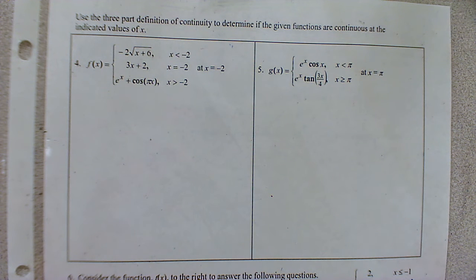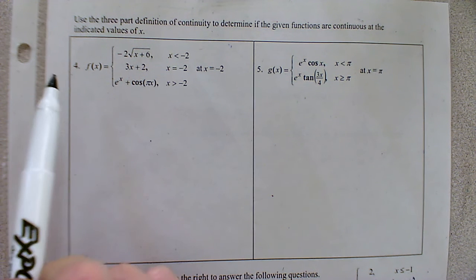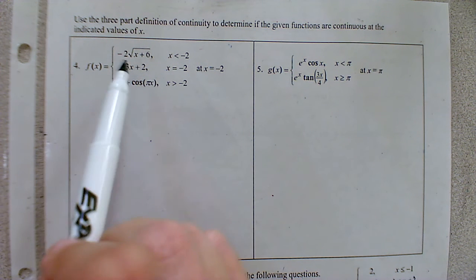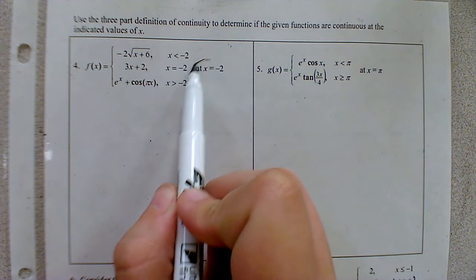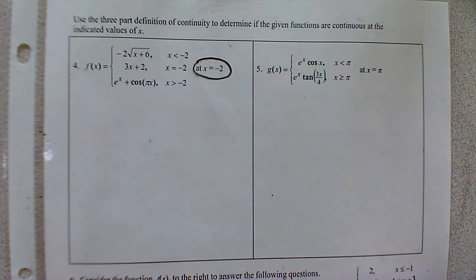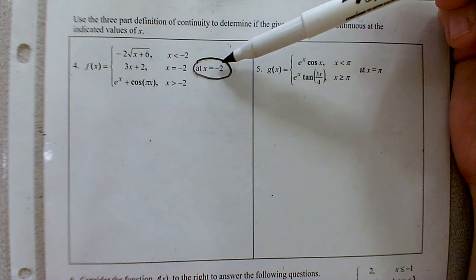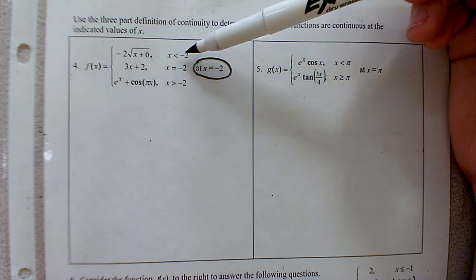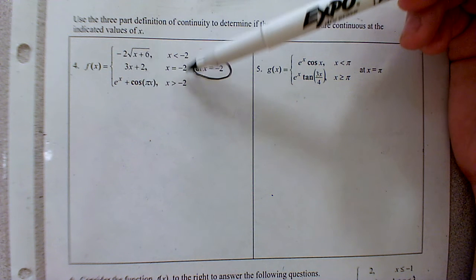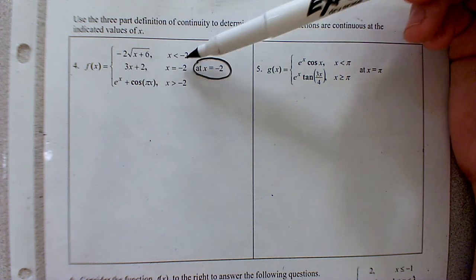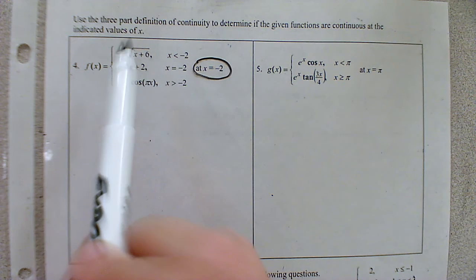For continuity, we've got to check that holy trinity: does the point exist, does the limit exist, and do they match? Taking a look at number four, we have three pieces and we specifically want to check the continuity at negative two. That makes sense because that value is part of the domain constraint section of this piecewise function.